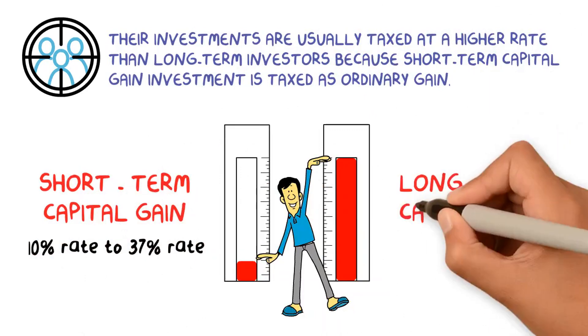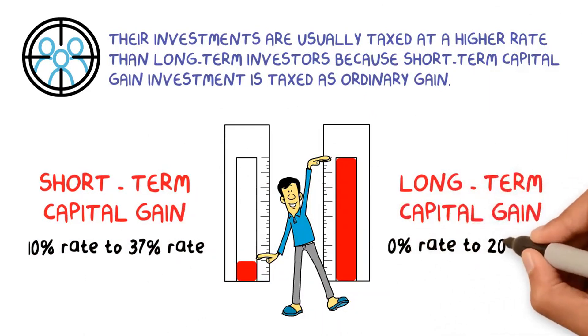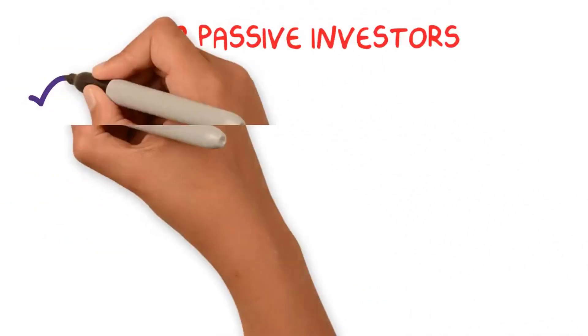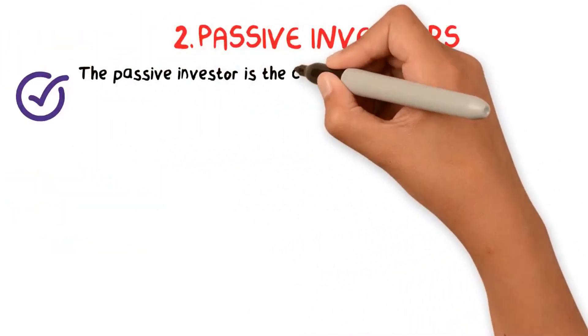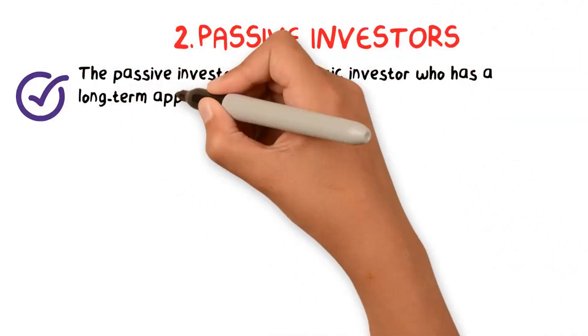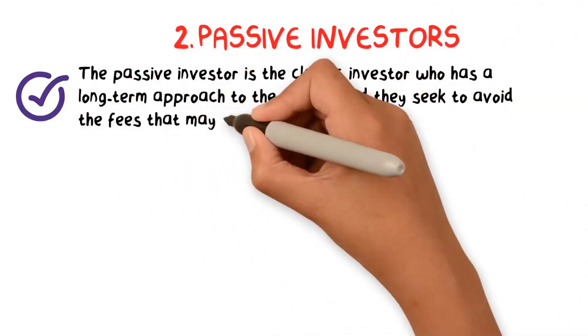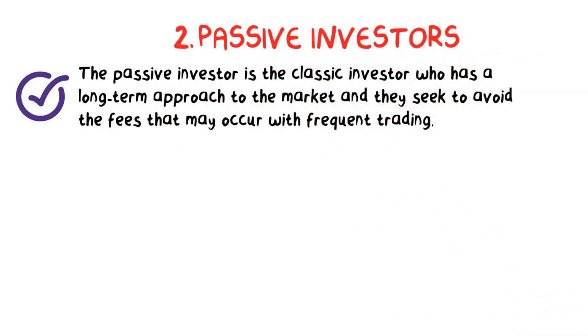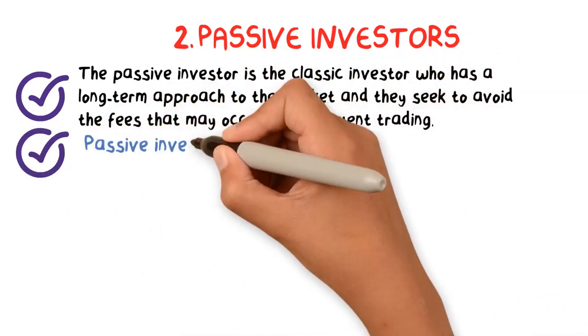The second type of investor is called passive investors. The passive investor is the classic investor who has a long-term approach to the market and they seek to avoid the fees that may occur with frequent trading. Unlike active investors, passive investors don't try to profit from short-term opportunities that are presented in the market.